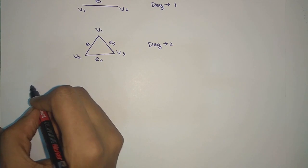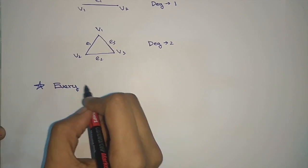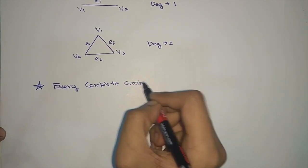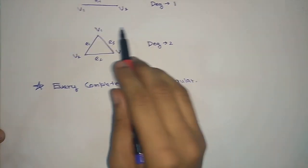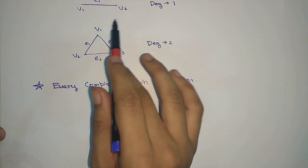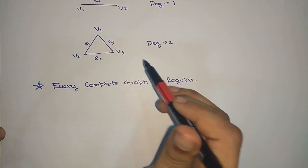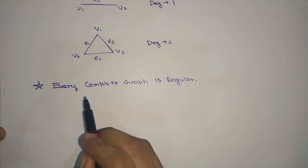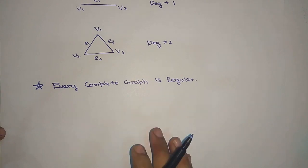We must always remember this note: every complete graph is regular. As seen in the examples, in the first example V1 and V2 each have degree 1, and in the second example V1, V2, and V3 each have degree 2 — every complete graph is regular. However, this may not be true for the vice versa case.